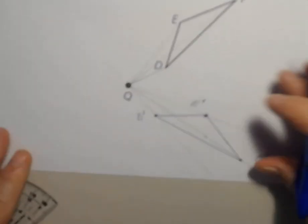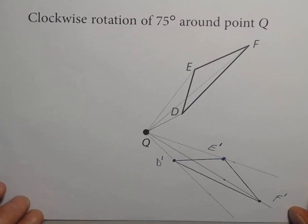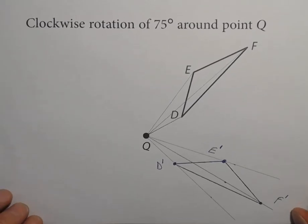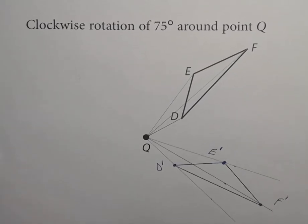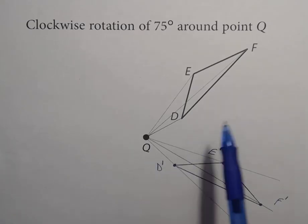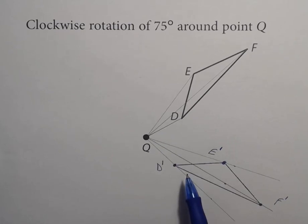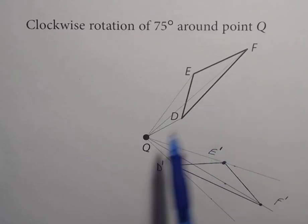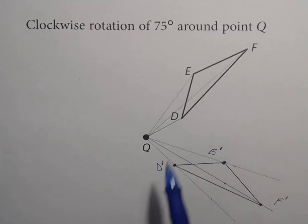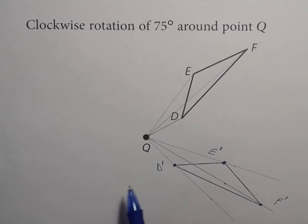Here we have our clockwise rotation of triangle DEF around point Q. Each of the angles connecting from D to D prime, from E to E prime, or from F to F prime is a 75 degree angle.